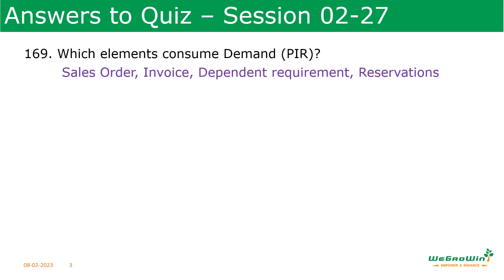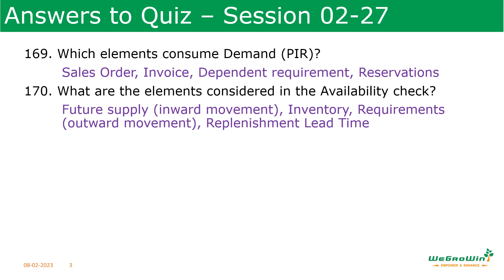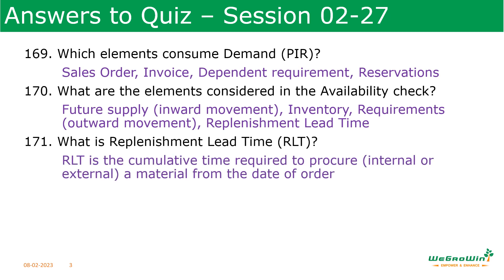What are the elements considered in the availability check? In the availability check we consider future supply — that is inward movement — available inventory, requirements — that is outward movement — and the total replenishment lead time. Replenishment lead time is the total time required to either procure or produce a material from the date of the order.